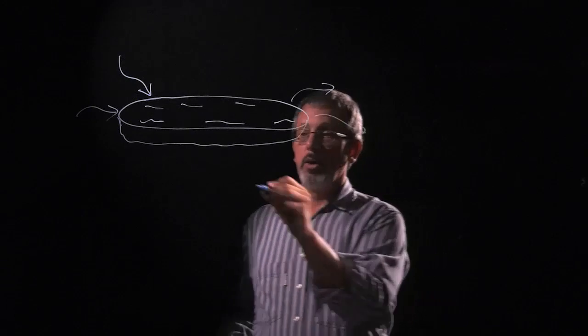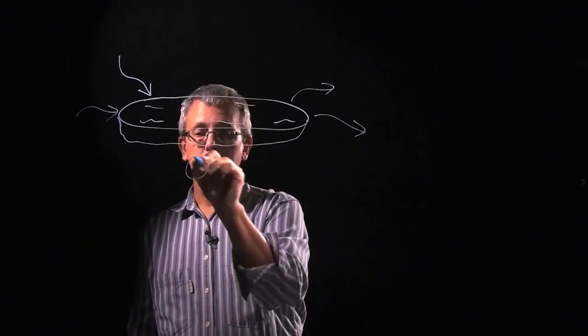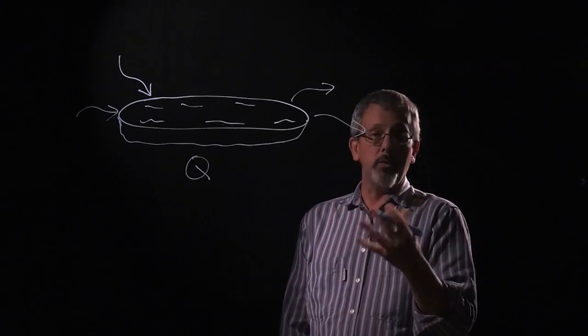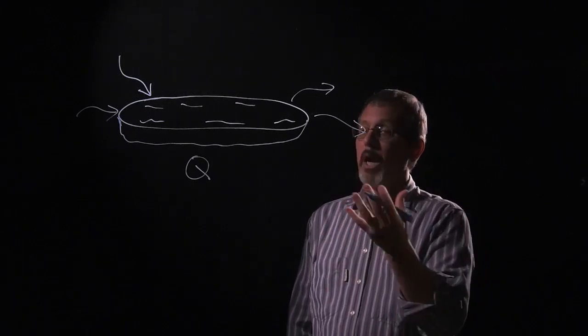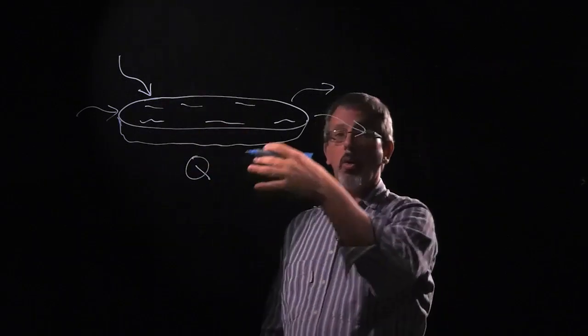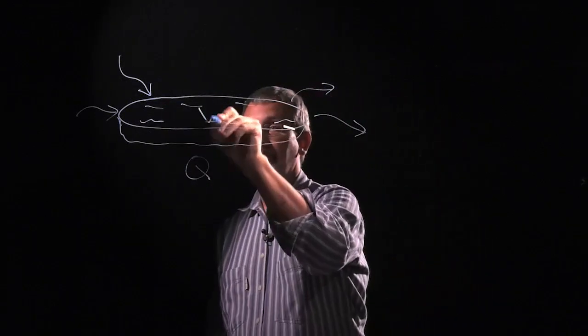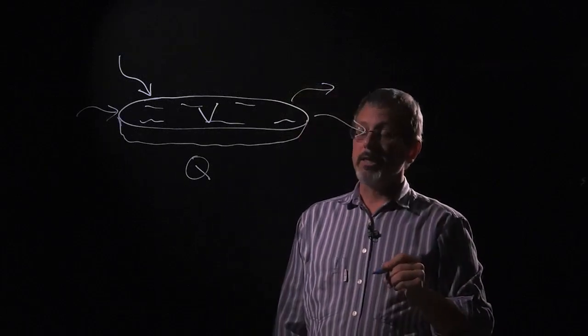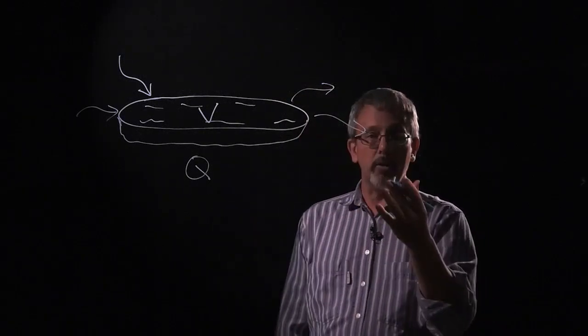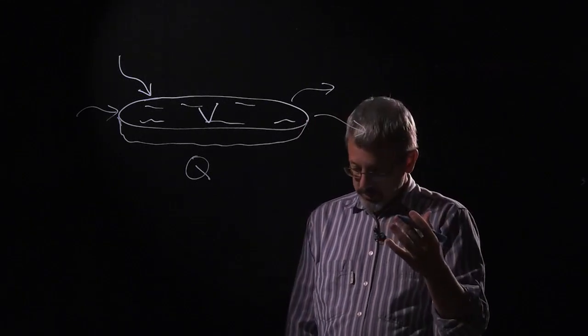Okay, so typically when we use our letter Q to represent flow, we assume that Q is some sort of magnitude and we usually assume that it's positive. That it's a positive magnitude and we let the direction of the flow either into or out of our volume be indicated by the arrows or by signs within our system.